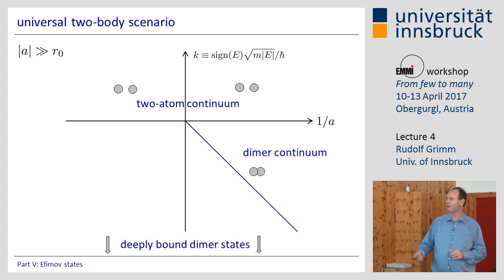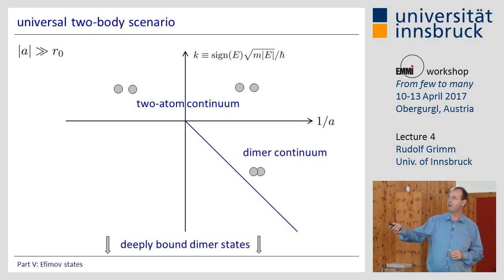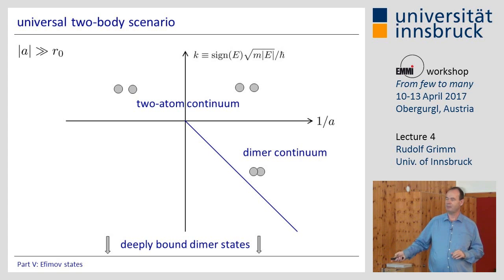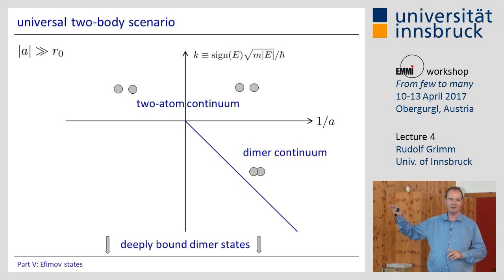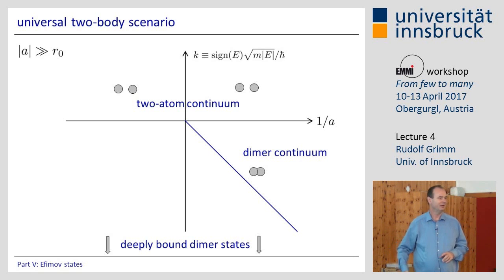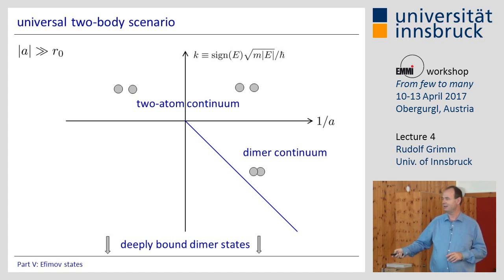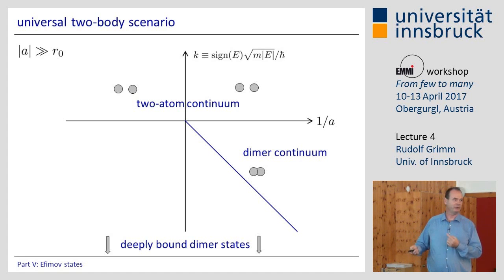Below, there are all the deeply bound dimer states. We have very large scattering lengths, so these are very weakly bound states, and there are all the other vibrational levels way down. And now from this two-body picture, I just want to go to the three-body picture.